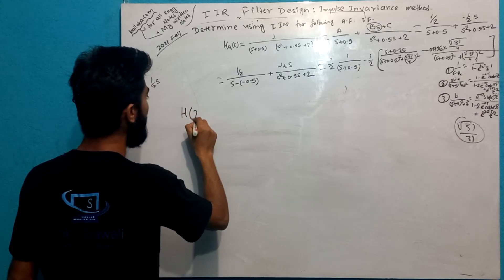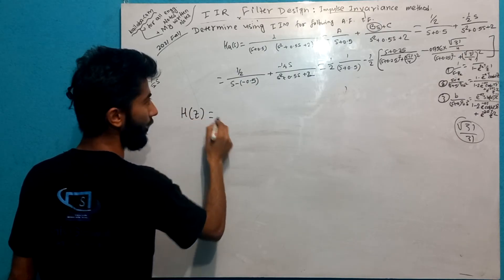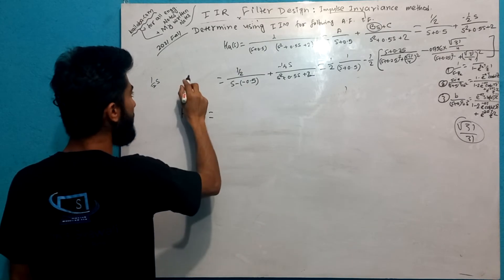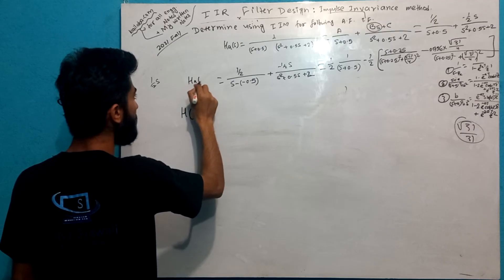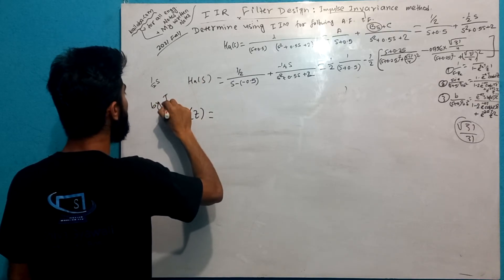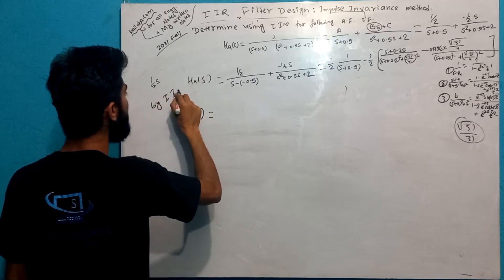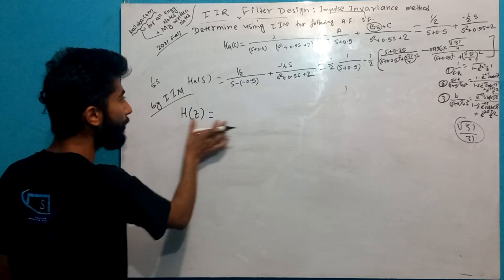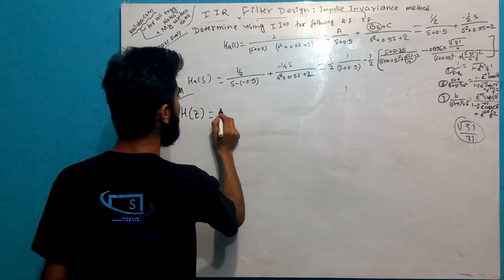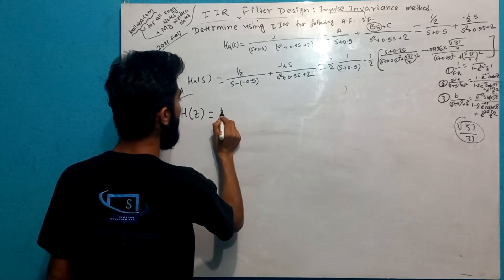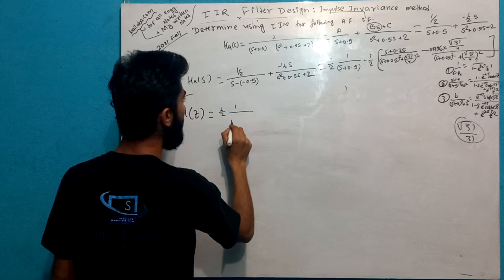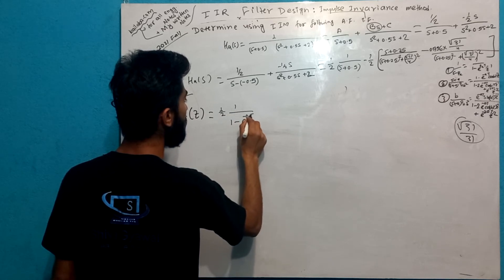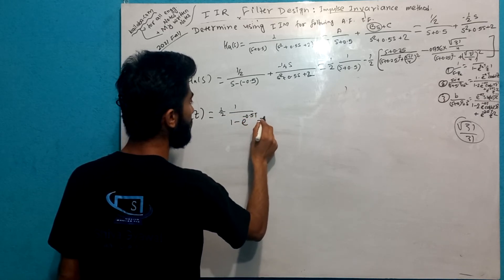This is now H(z), this is H(z) by the impulse invariance method. This is 1 by 2 times 1 by (1 minus e to the power minus 0.5T Z inverse).